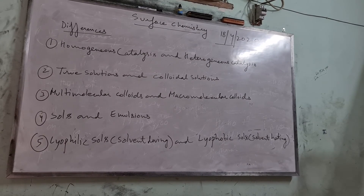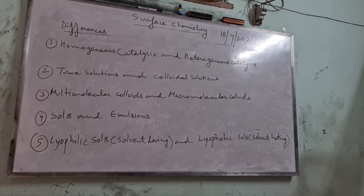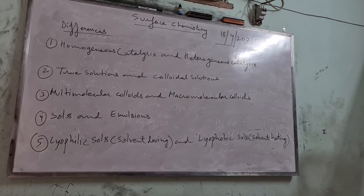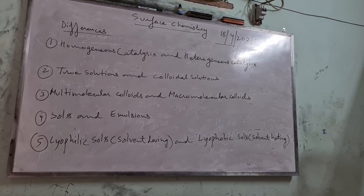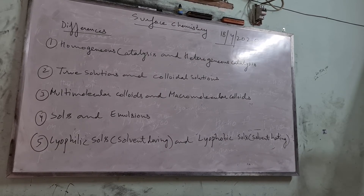The next difference is between multi-molecular colloids and macromolecular colloids. Multi-molecular colloids are formed by the aggregation of a large number of atoms or smaller molecules, whereas macromolecular colloids are formed by molecules of large molecular mass on dissolution in a suitable solvent. Examples of multi-molecular colloids: gold sol. Examples of macromolecular colloids: starch, cellulose, protein, and enzymes. Multi-molecular colloids cannot resemble a true solution, whereas macromolecular colloids always resemble a true solution.